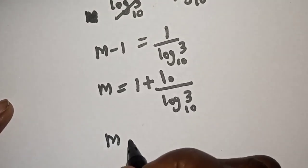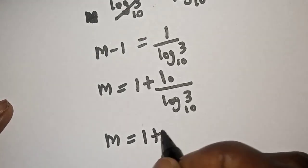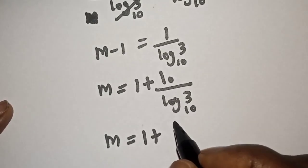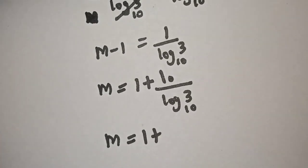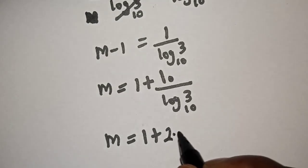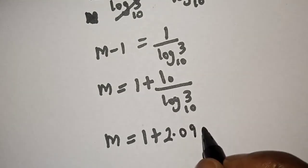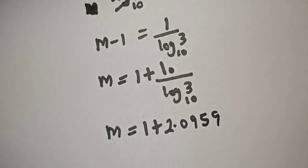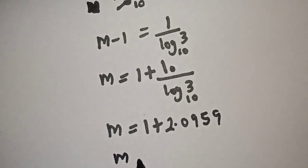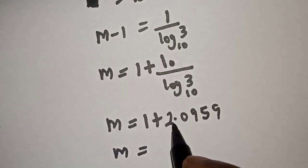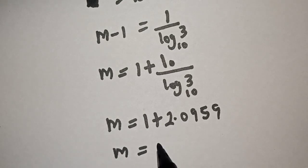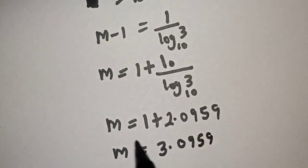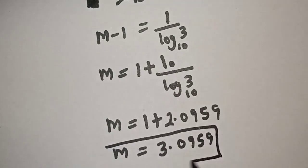Then m is equal to 1 plus 1 over log 3 base 10, is 2.0959. Then m is equal to 1 plus 2.0959, that is 3.0959. And this is the final answer.